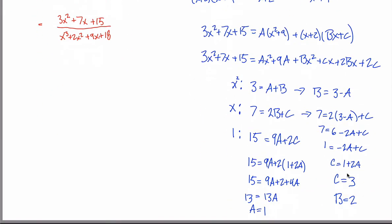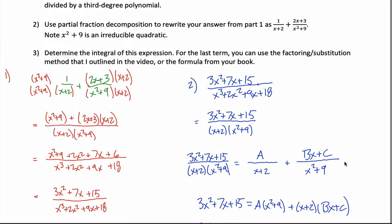Once I know a equals one, I plug in to get c equals one plus two, so c equals three. And from b equals three minus a, with a equal to one, b equals two. So a, b, c are one, two, and three respectively — easy to remember. That means the partial fraction decomposition is one over x plus two plus two x plus three over x squared plus nine, which matches what I started with in green.